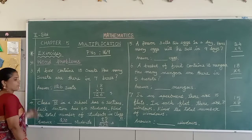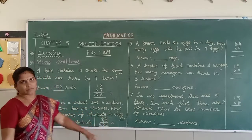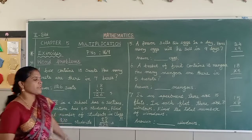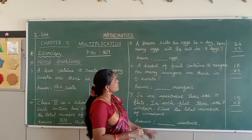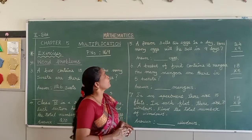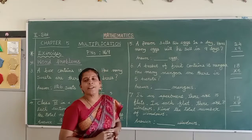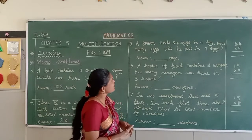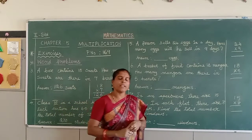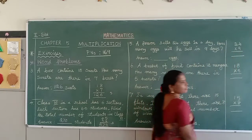The total number of students is 270 students in class 6 across all sections. Now come to the next sum. A person sells 24 eggs in a day. How many eggs will he sell in 9 days? In a day he sells 24 eggs — find the total number of eggs sold in 9 days. Just make it as a factor: 24 into 9.